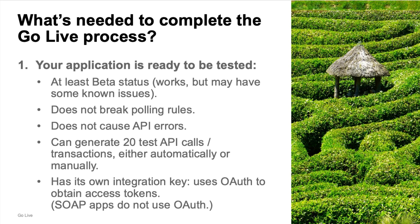First, your application needs to be ready to be tested, at least beta status. Your application works but may still have some known issues. It must not break the DocuSign polling rules, which I'll cover during this video. It must not cause any API errors. To pass GoLive, your application needs to generate 20 test API calls without API errors, either automatically or manually. Your application must have its own integration key and use OAuth to obtain access tokens. SOAP apps are the exception — they do not use OAuth.